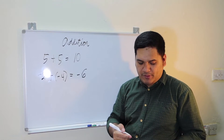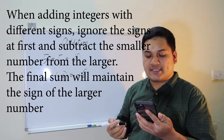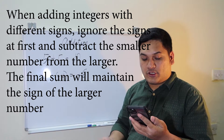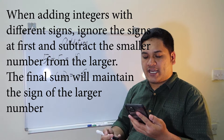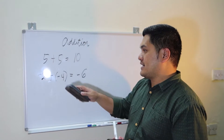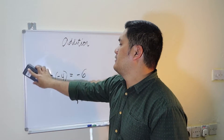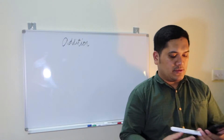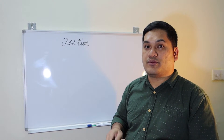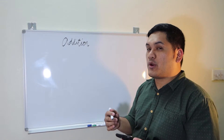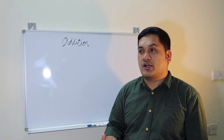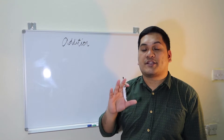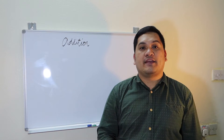The second rule is: when adding integers with different signs, ignore the signs at first and subtract the smaller number from the larger. The final sum will maintain the sign of the larger number. So you subtract the smaller number from the bigger number and then follow the sign of the greatest number.